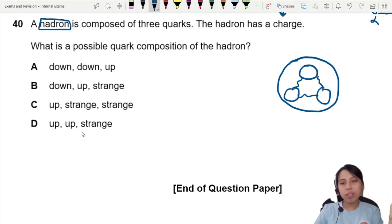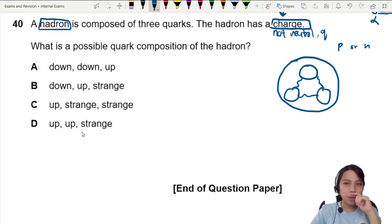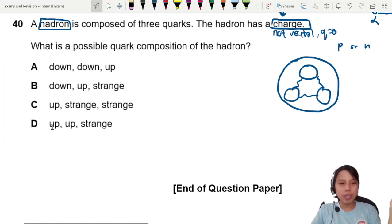This can be an example of proton or neutron, they also have three quarks. Hadron has a charge though, positive or negative, so this one is not neutral where q is zero. What is a possible quark composition of the hadron? Up up down, down up strange, up strange strange, up up strange. What is this?